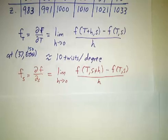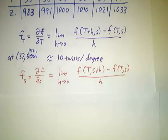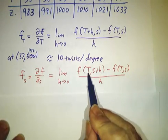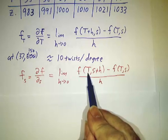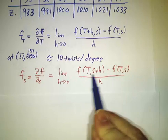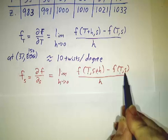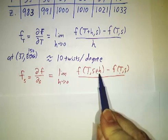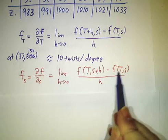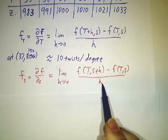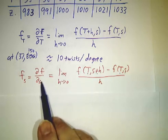You can also talk about the partial derivative with respect to salinity. You hold the temperature fixed. You compare the twists at the same temperature, but at slightly different salinities. You say, how much does the twistiness change per change in salinity? And that's the partial derivative with respect to s.